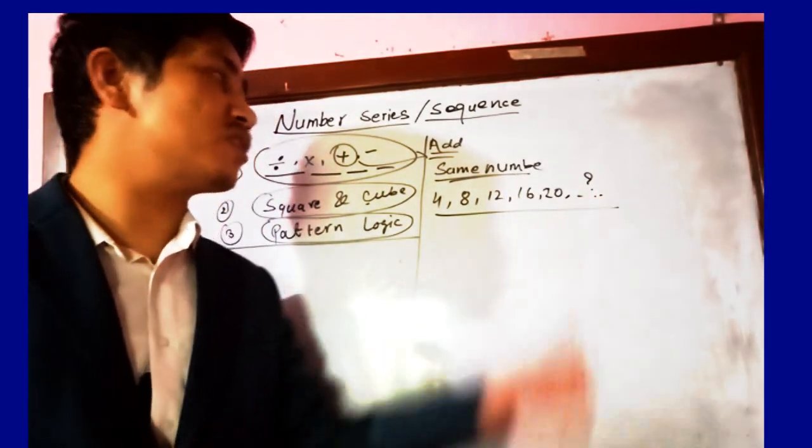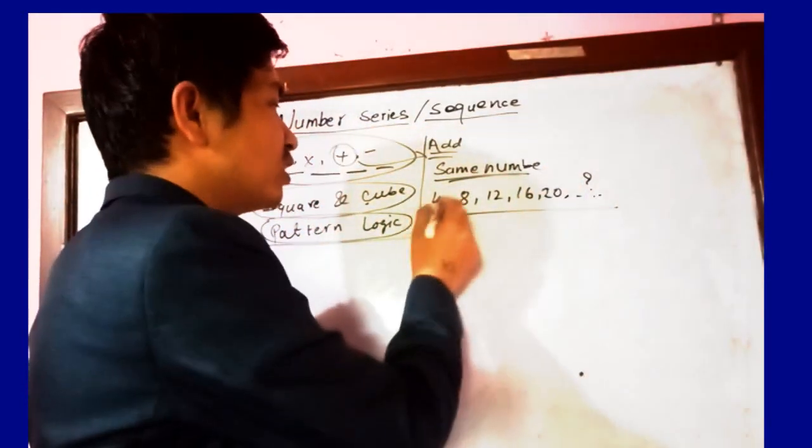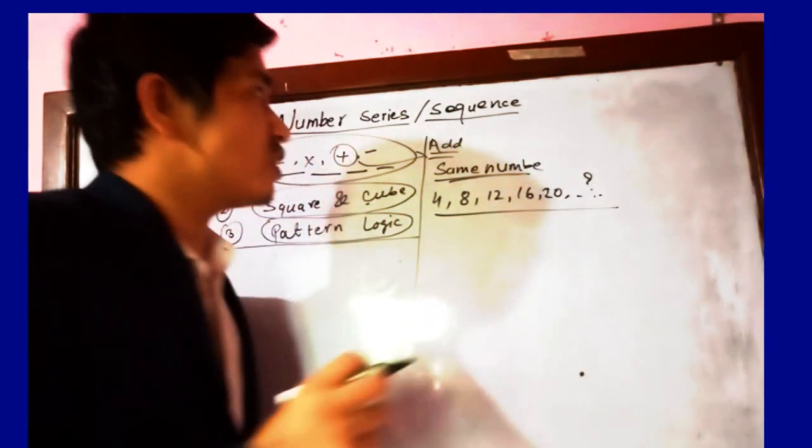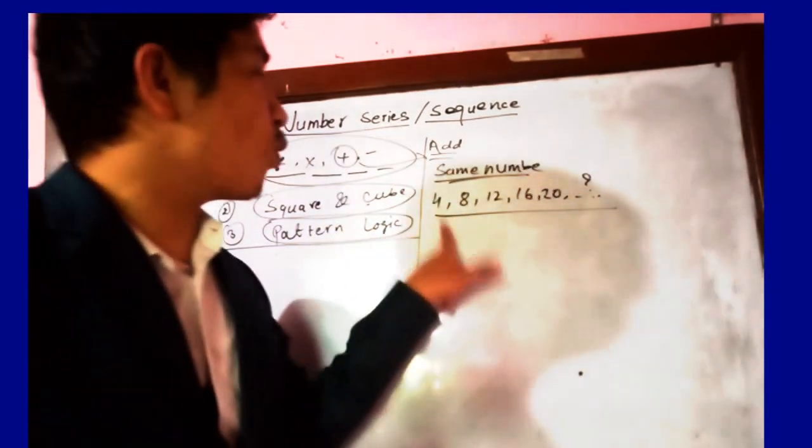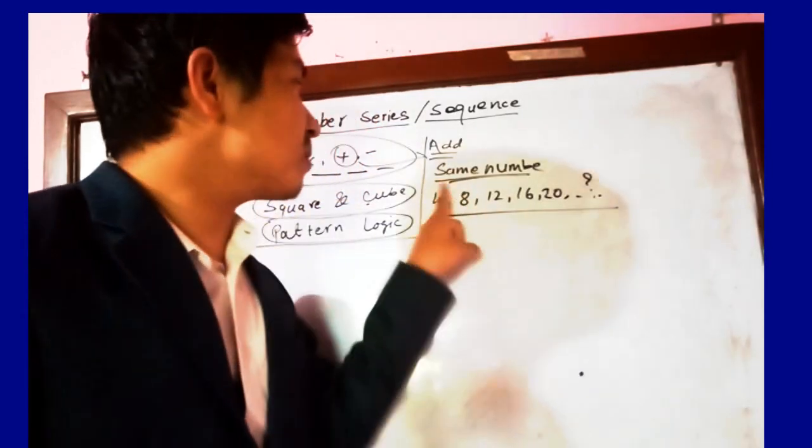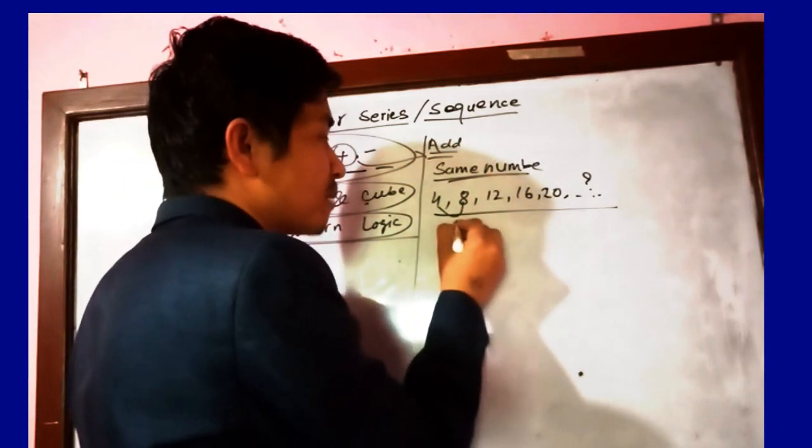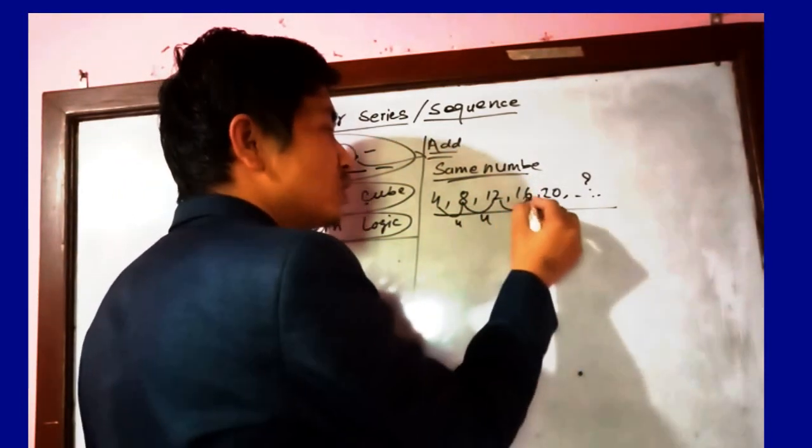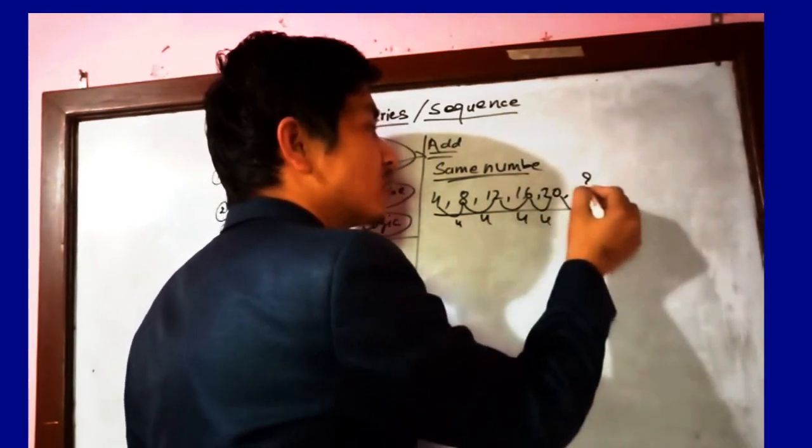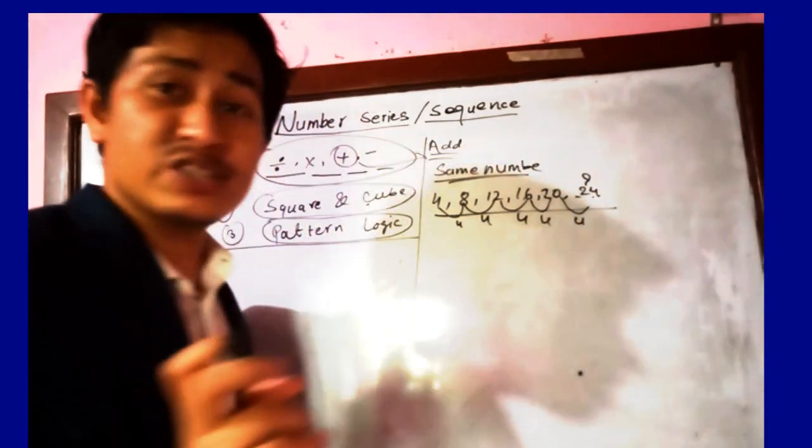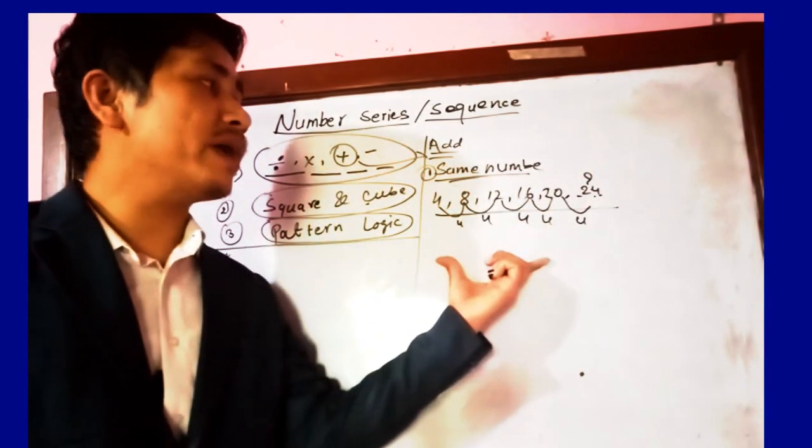Let me show you a pattern example. In this series: 4, 8, 12, 16, 20 - the same number, 4, is being added. So the next number would be 24. This is the first pattern: adding the same number.